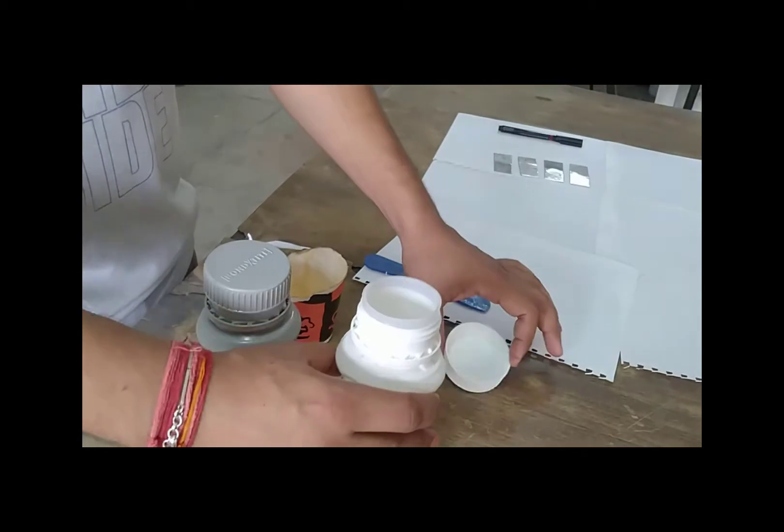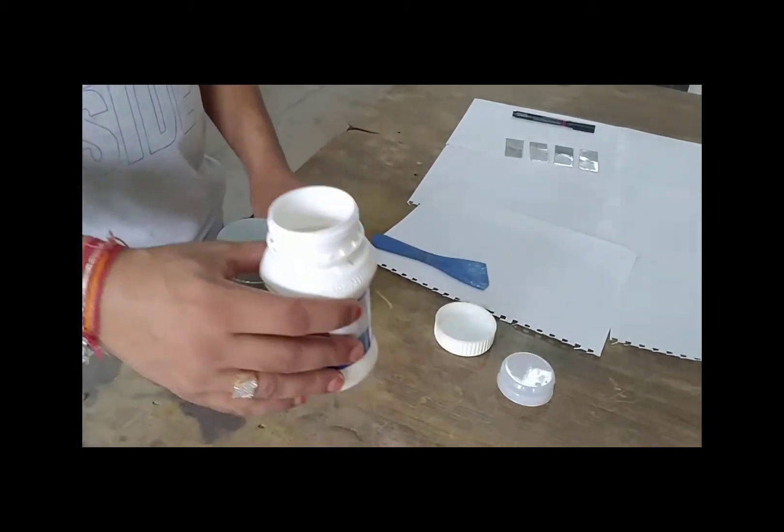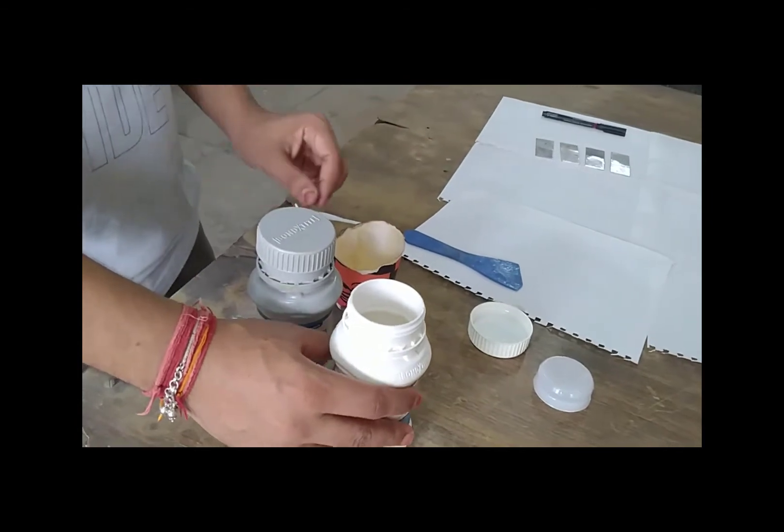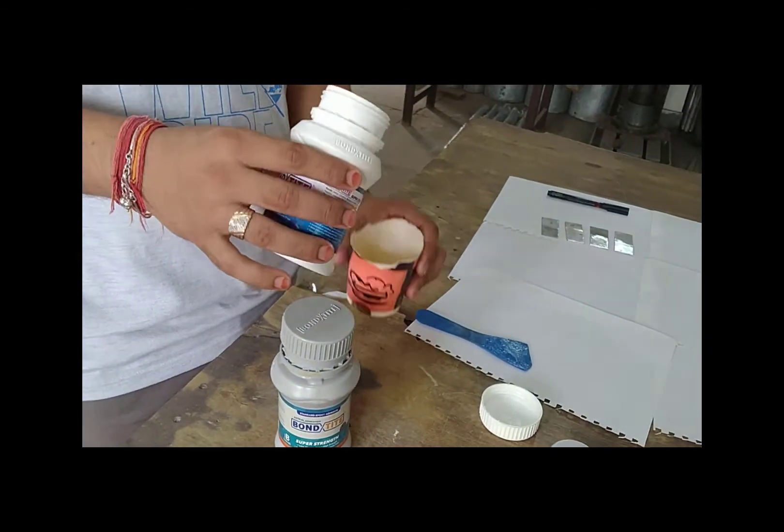We take equal amounts of these two and mix them properly. The quantity should be the same of resin and hardener to be mixed properly and act as an adhesive.